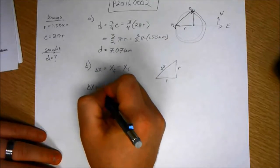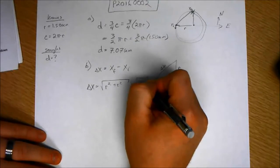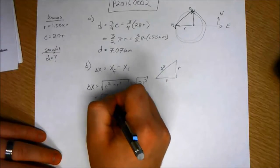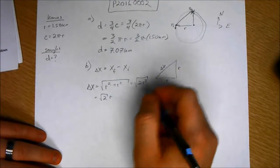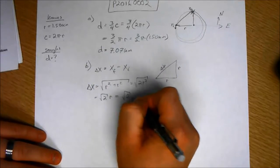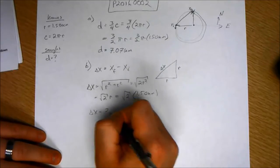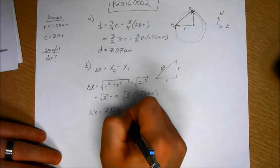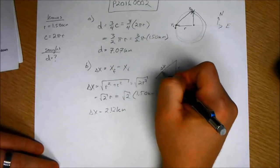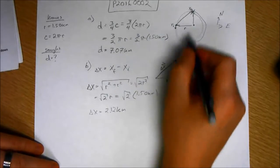So delta x is equal to r squared plus r squared, or the square root of 2 r squared, which is just the square root of 2 times r. Delta x equals 2.12 kilometers. So this is highlighting the difference in the displacement, if you want to draw it as vector form, and the distance traveled.